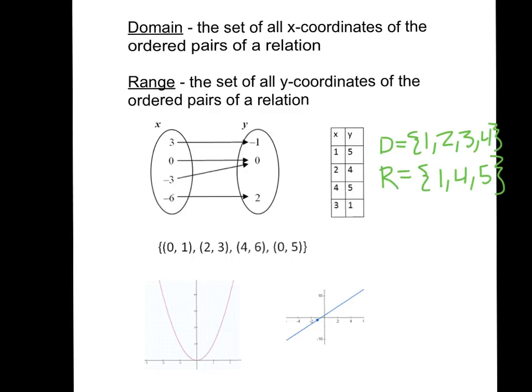Graphs sometimes get a little bit trickier. Let's start with the one on the right. Eventually, this line is going to keep going all the way to positive infinity and negative infinity, which means that our domain and our range are both all real numbers for this graph.